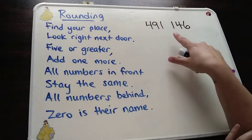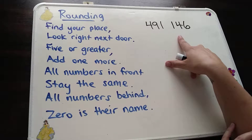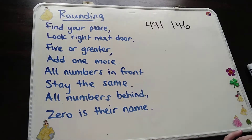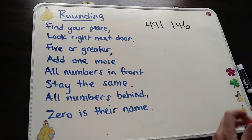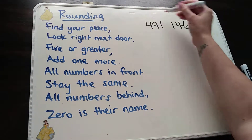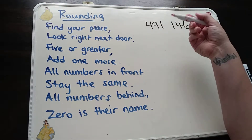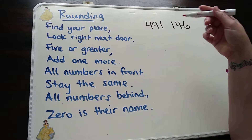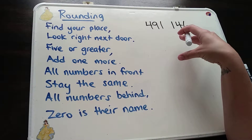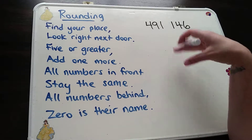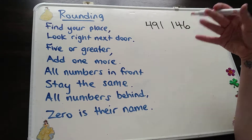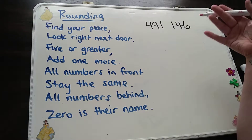How this poem is organized is that each section will tell you each step that follows each other. So if you look at an example of 491,146, and we would like to round it to the nearest 100,000. It helps if you use a whiteboard or something like that, and then you can always erase and go back to the original number if you have more than one example to do with the same number.